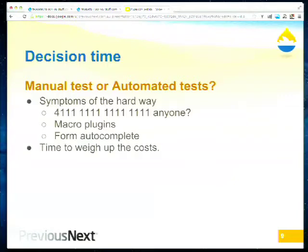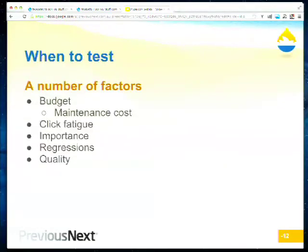There are other things people use — macro plugins for Firefox or Chrome that record clicks and let you replay them. But you have to weigh the costs: there's a cost associated with manual testing and a cost when things go wrong. If you're responsible for site maintenance and you've constantly got regressions you should have had test coverage for, that cost would offset the time it takes to write tests properly from the start. There's also click fatigue — you don't want an RSI injury from going through the checkout process.